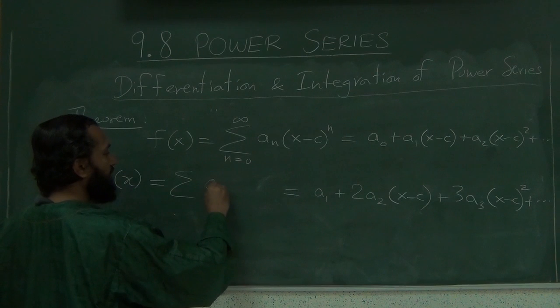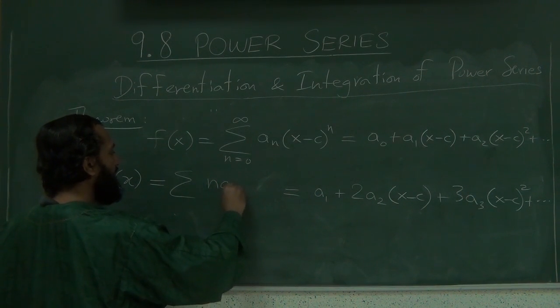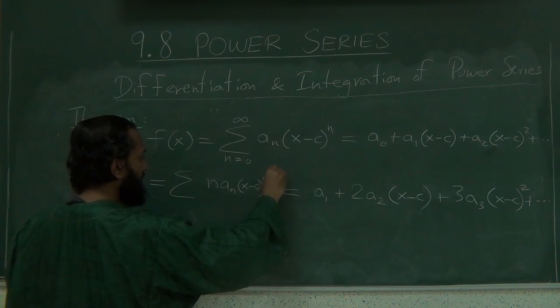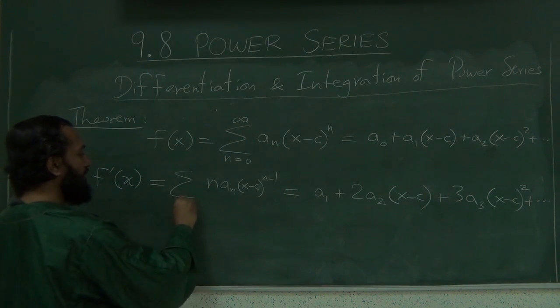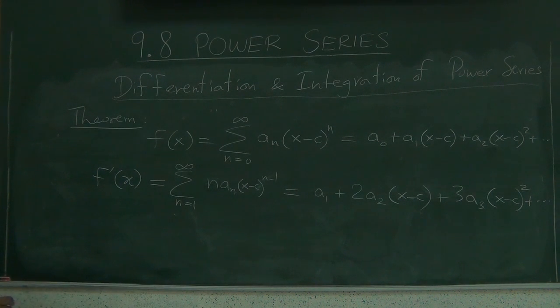So let's write this down. What would this look like? This is n a_n (x minus c) to the power n minus 1, yes, n minus 1. And as we said, we'll start with n equals 1 to infinity. This is what we wrote earlier on the board. That's the derivative.